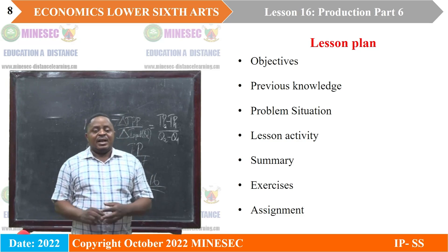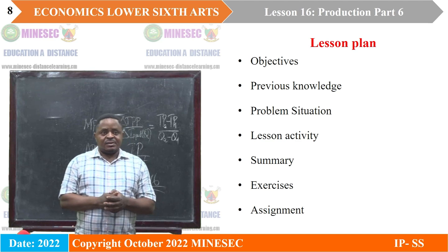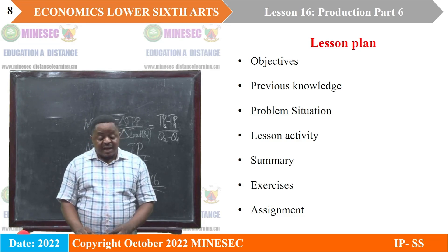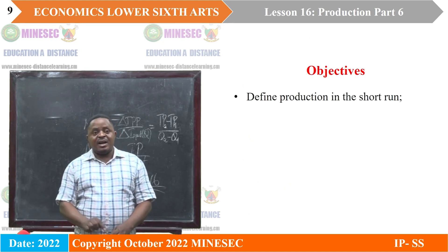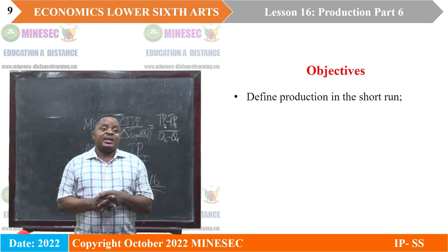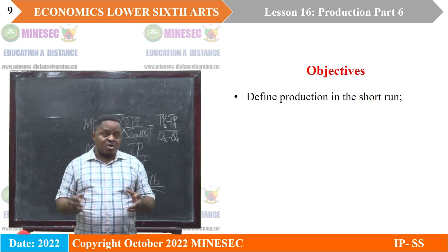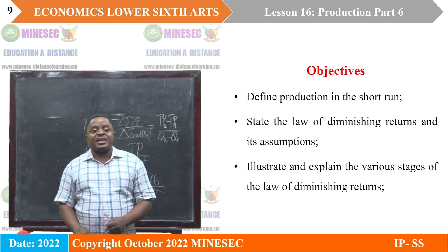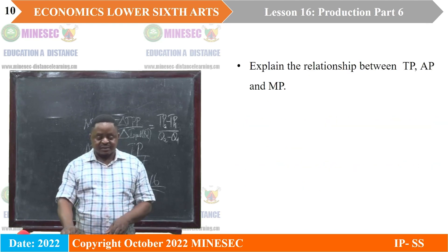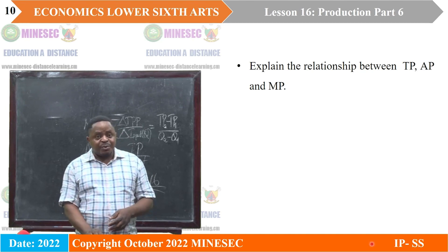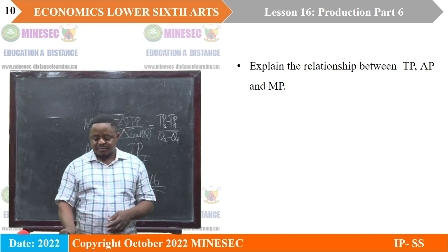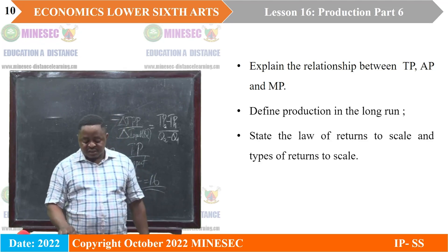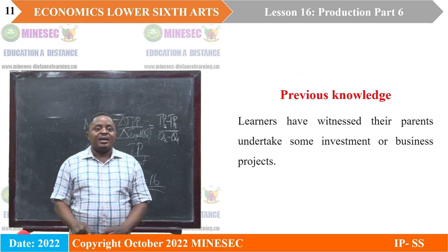Our lesson has the following plan: objectives, previous knowledge, problem situation, lesson activity, summary, exercises, and assignment. The objectives are: to enable learners to define production in the short run; state the law of diminishing returns and its assumptions; illustrate and explain the various stages of the law of diminishing returns; explain the relationship between total product, average product, and marginal product; define production in the long run; state the law of return to scale and types of return to scale; and illustrate the law of return to scale.